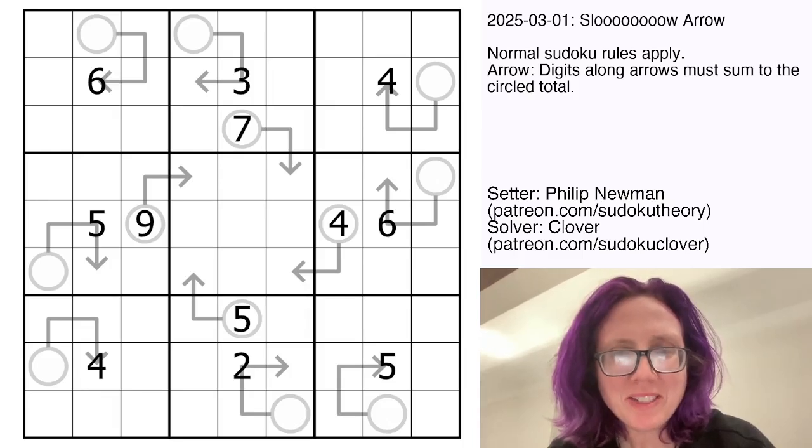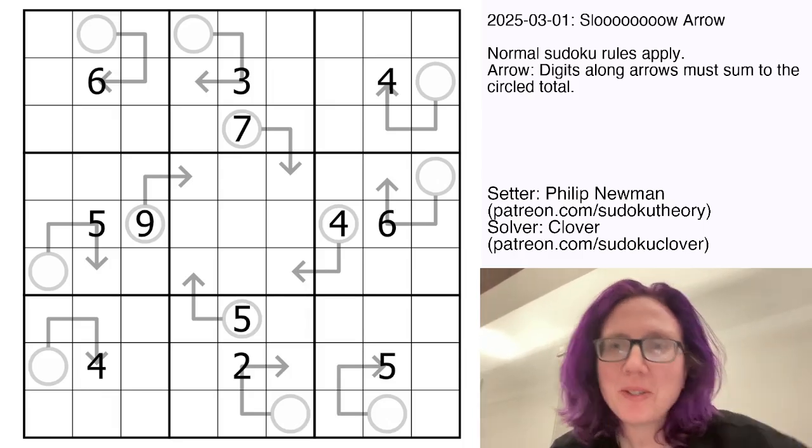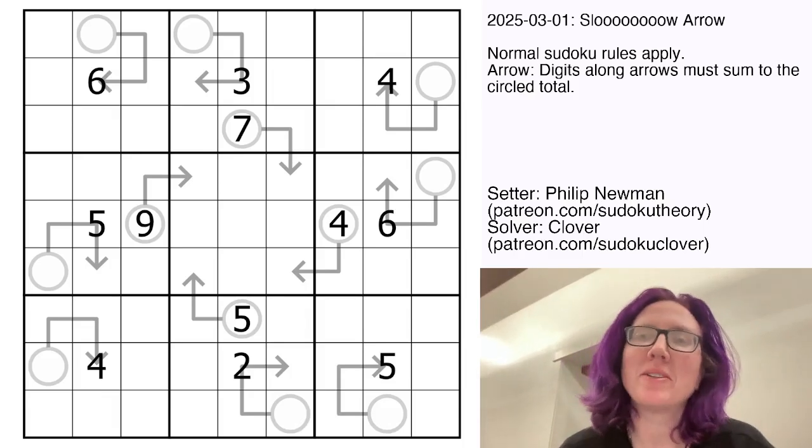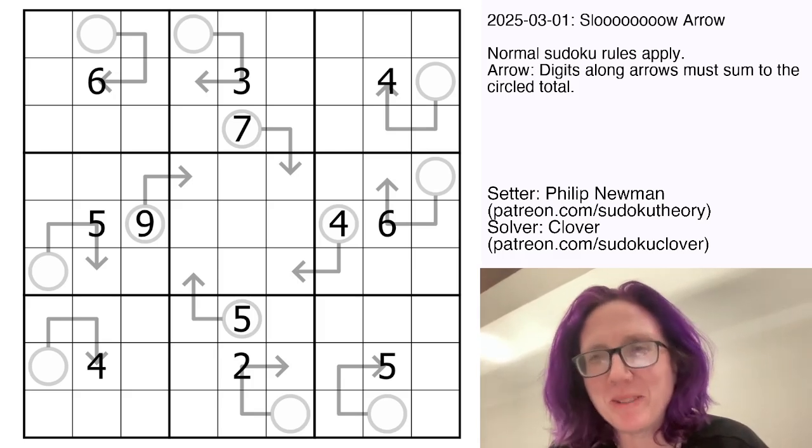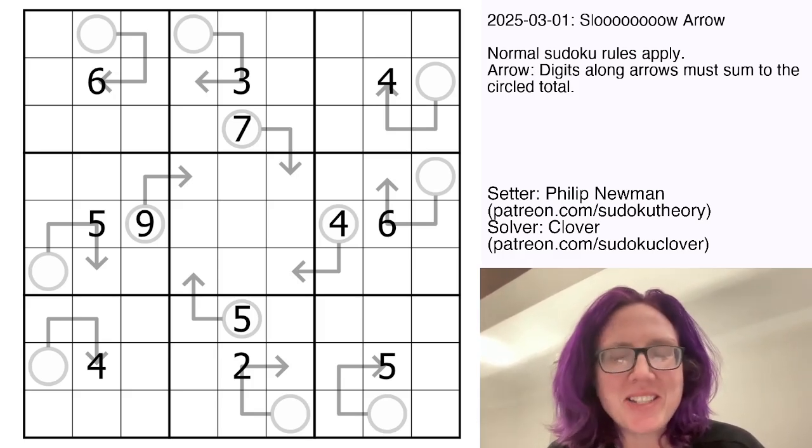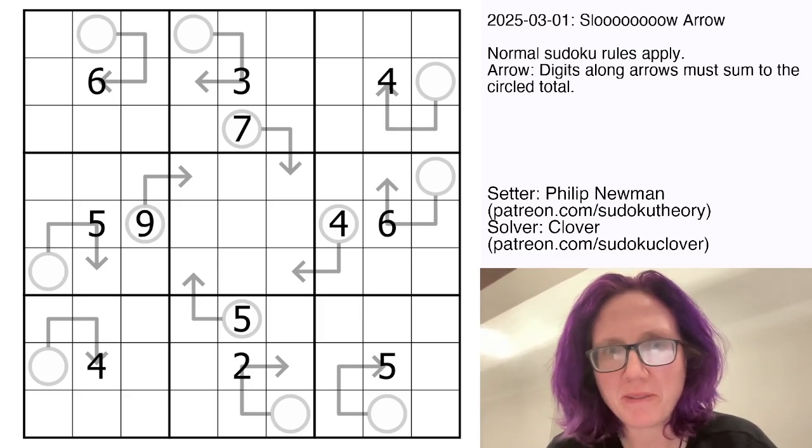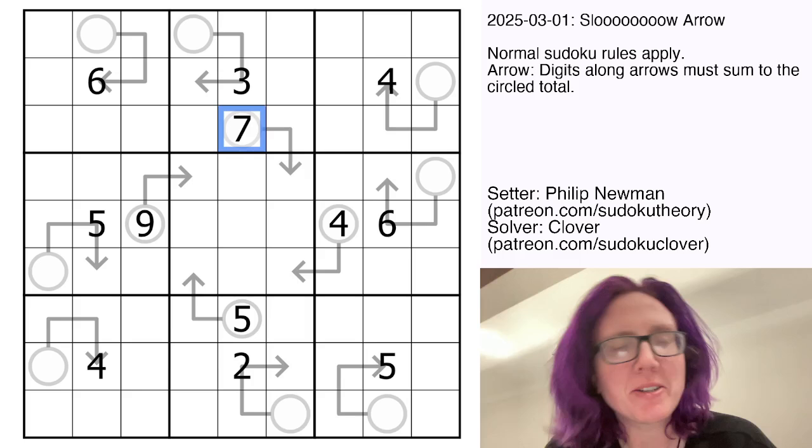Hello, my friends. I'm Clover, and this is Genuinely Approachable Sudoku. Today we are solving a puzzle called Slow Arrow by Philip Newman. This was posted in GAS on March 1st, 2025, and it is an arrow sudoku.